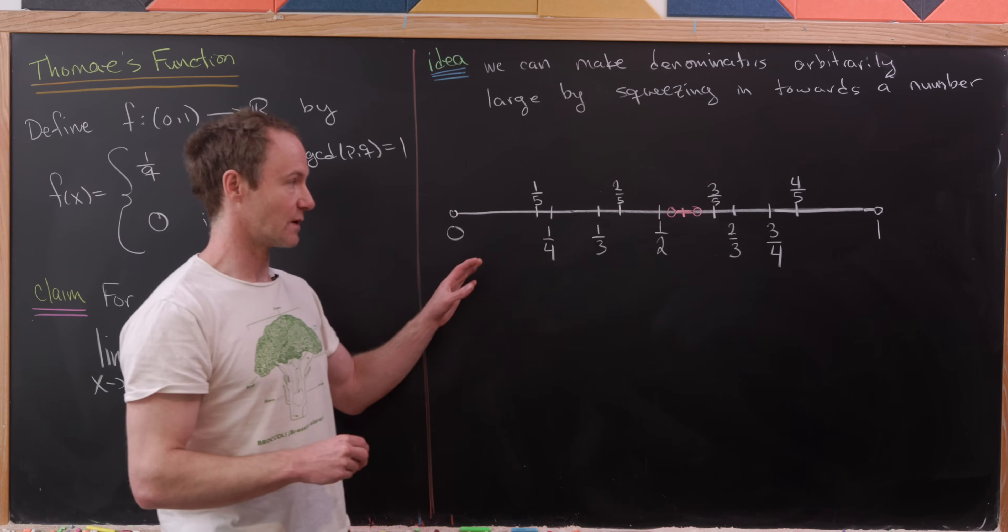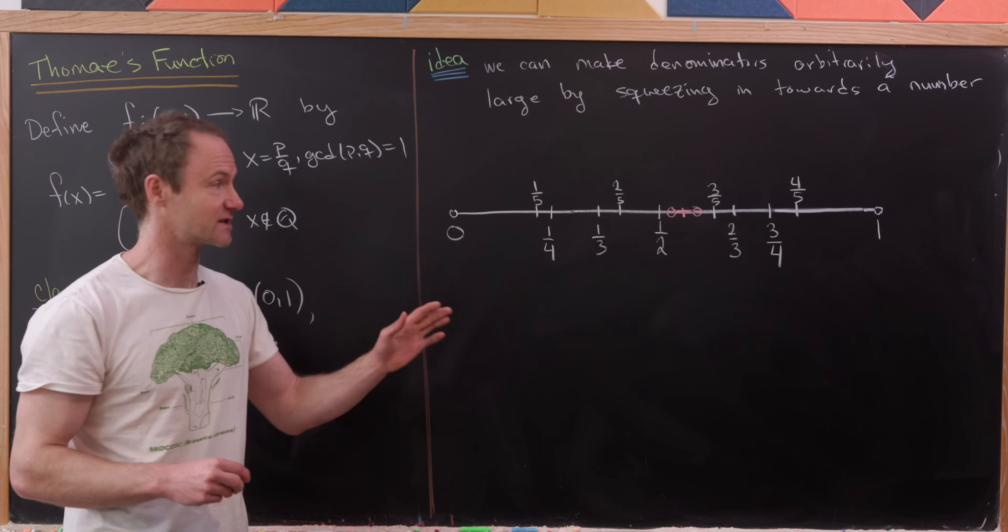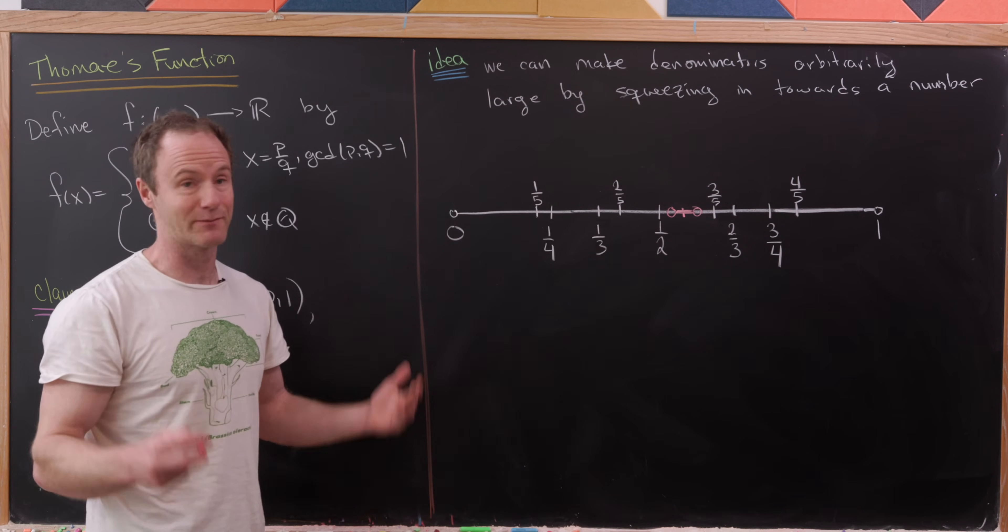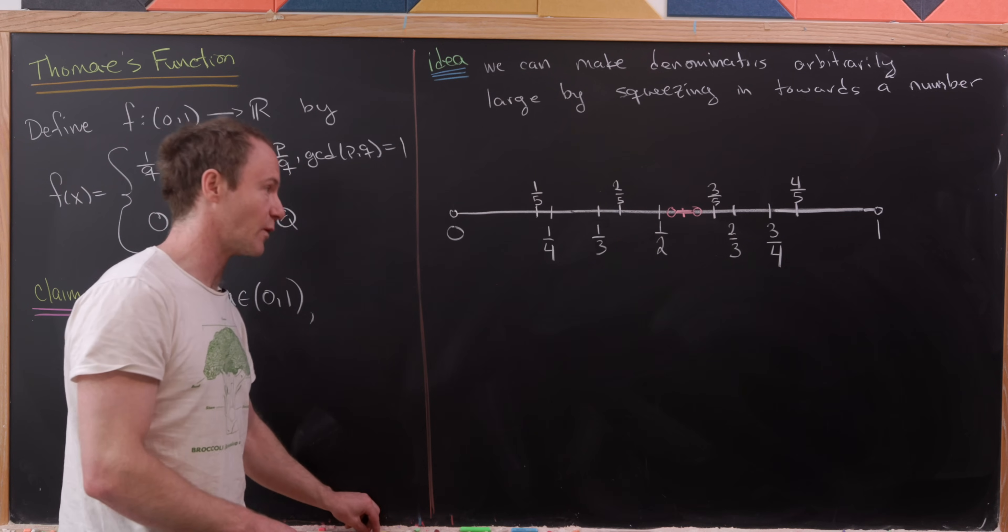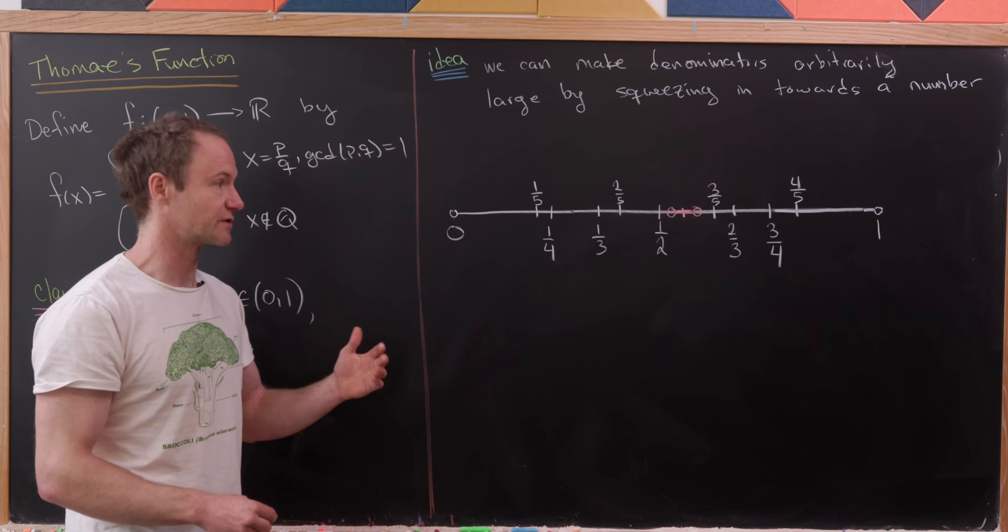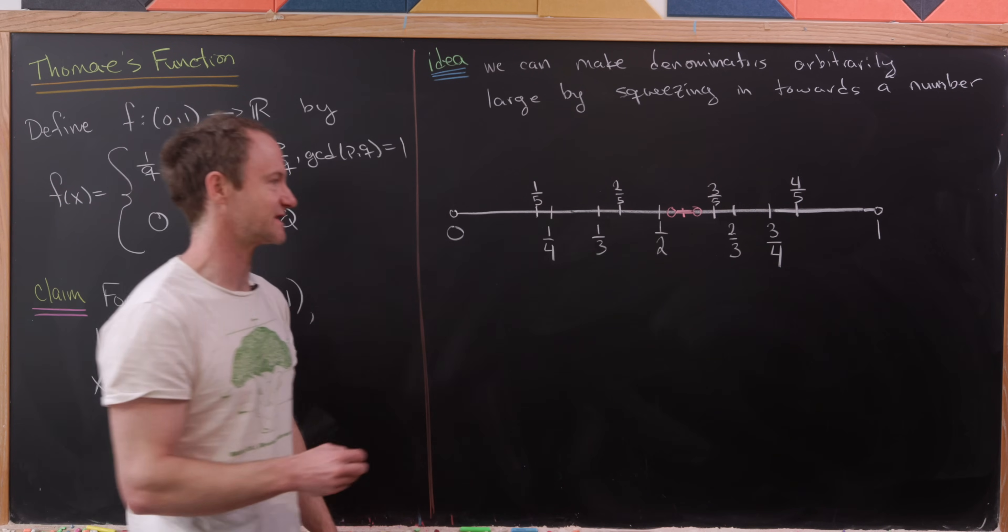And that's because, well, notice I just listed all of the rational numbers whose denominators are less than six on the board, and I just kept away from them. And I can do this regardless of where I start on this open interval from 0 to 1, as long as I don't start on one of those rational numbers indicated.